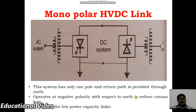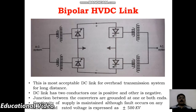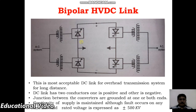Monopolar HVDC links are usually used for low power capacity links. Next, the bipolar HVDC link is the most acceptable HVDC link for overhead transmission systems for long distance DC links. It has two conductors — one positive and one negative. The junction between the two converters is grounded at one or both ends. Continuity of supply is maintained even if a fault occurs on any one line. The rated voltage is expressed as plus or minus the value of that particular voltage.